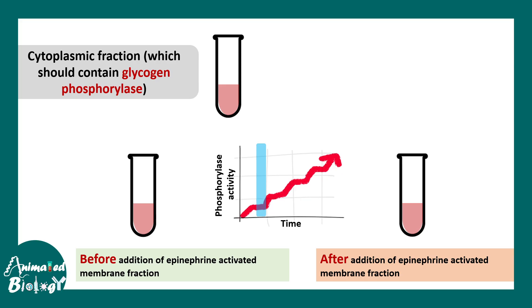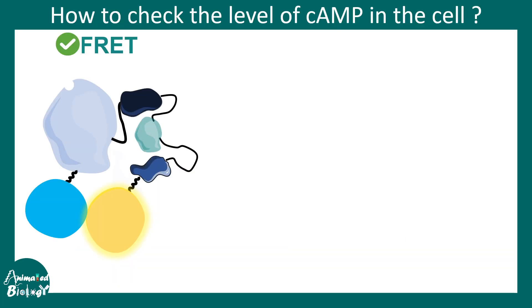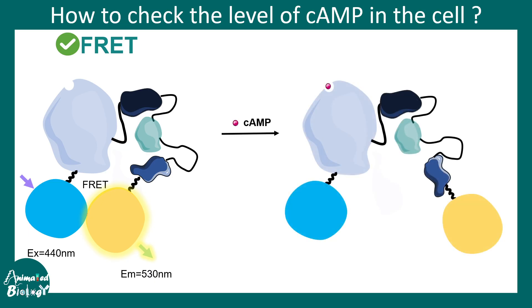To check the level of cyclic AMP in a cell in real time, one can use the FRET technique. There are specific FRET sensors for cyclic AMP that mimic protein kinase A, which normally binds cyclic AMP. In the normal case, FRET occurs: excitation at 440 nm gives emission at 530 nm. But when cyclic AMP binds, there is a loss of FRET due to a conformational change, shifting emission to 475 nm instead of 530 nm.